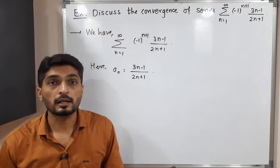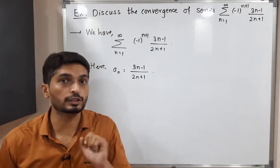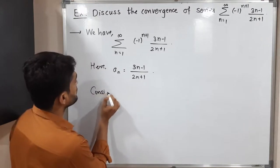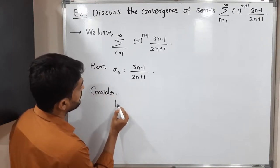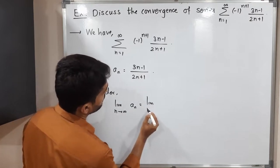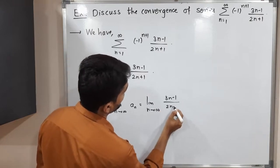But see, in this example, I am doubtful about the last condition, so that's why I will check the last condition first. Consider, I will go for the last condition, that is limit n tends to infinity a_n. So this is equal to limit n tends to infinity 3n minus 1 upon 2n plus 1.